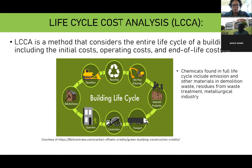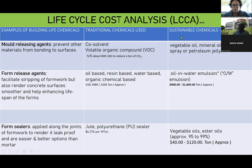For example, within the building life, mold release agents prevent other materials from bonding to the surface. The traditional chemical uses are co-solvents, which are basically volatile organic compounds — and CO2 is actually one of the volatile organic compounds. In terms of cost, you use about $600 to reduce a ton of CO2. But if you're using sustainable chemicals, you can use things like vegetable oil, mineral oils, cooking spray, or petroleum jellies, which also do the same — they protect the building from production of mold.